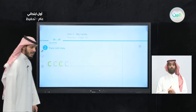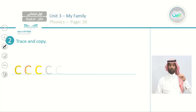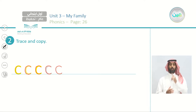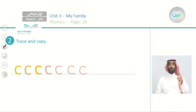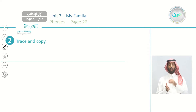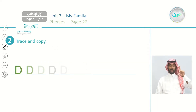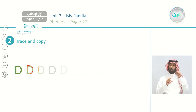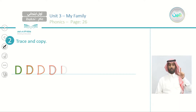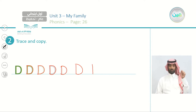What after B? We have the letter C. Let's trace C. So we have C. Let's write it two more times. This is C. What after C? We have the letter D. So we have D in capital form. Let's trace: one line, one big half circle on the right side. Let's write two more times. This is D, and we pronounce it as D.